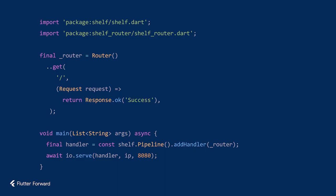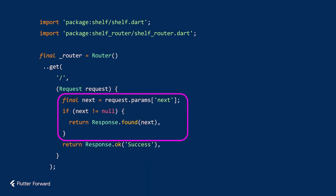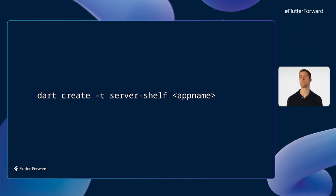Shelf helps you start writing plain Dart code that responds to HTTP requests. You can route specific URLs to dedicated functions, easily interrogate headers and cookies, and any query string parameters. Getting started with shelf is as easy as opening your terminal, installing Dart if it's not already there, and running dart create -t server-shelf with your app name. This will create a working project that sets up the basics for you.